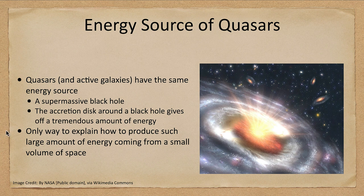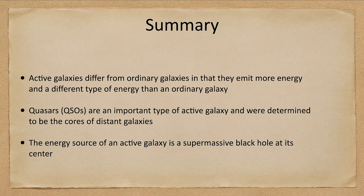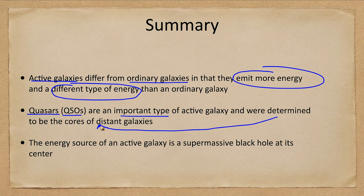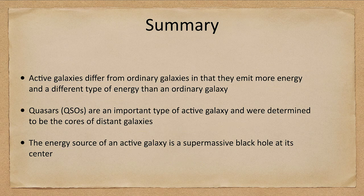To summarize: active galaxies differ from ordinary galaxies in two ways — they emit more energy and a different type of energy than an ordinary galaxy. Quasars, also called QSOs, are an important type of active galaxy and were determined to be the cores of distant galaxies. The energy source of an active galaxy is a supermassive black hole at its center. That concludes this lecture on active galaxies and quasars.